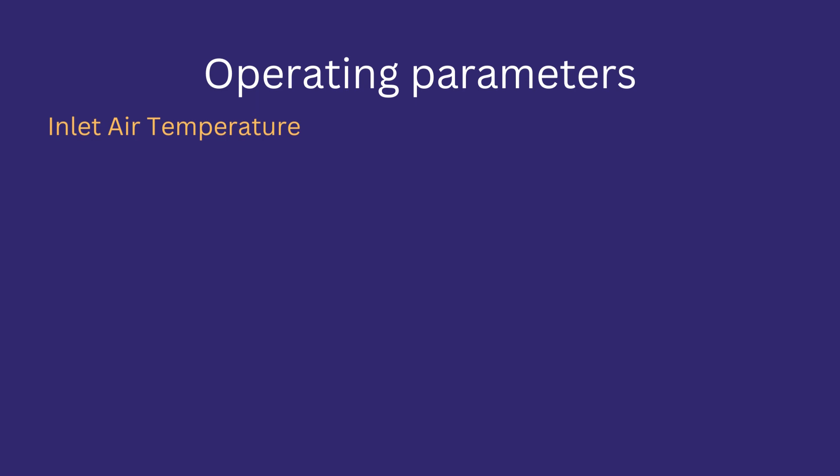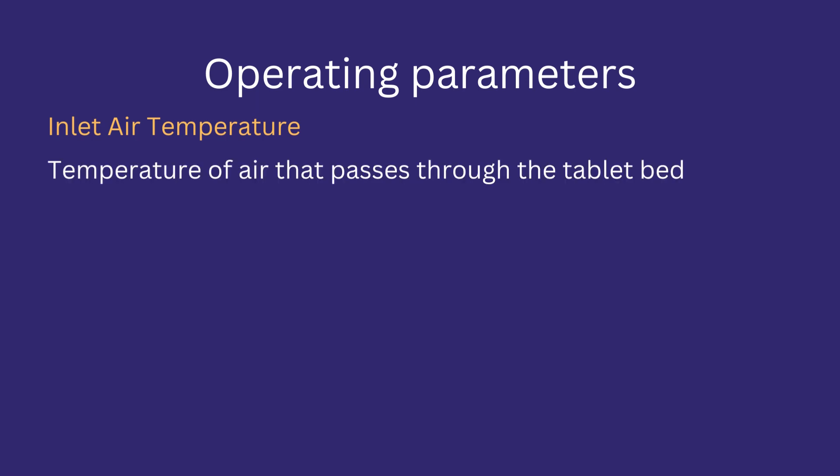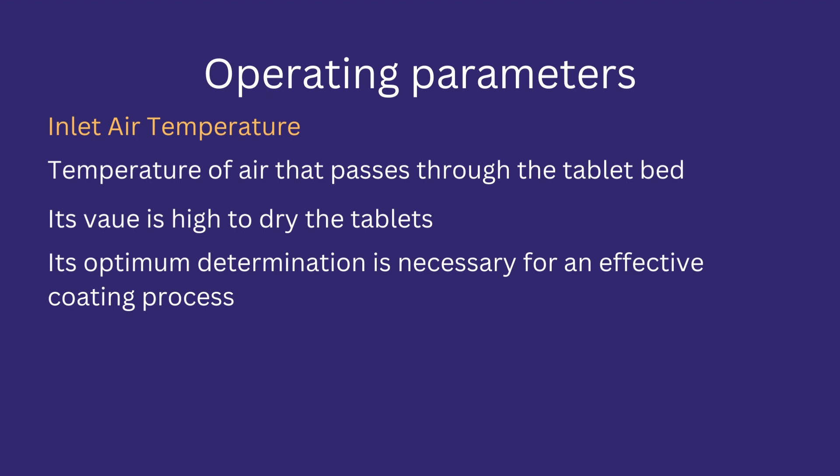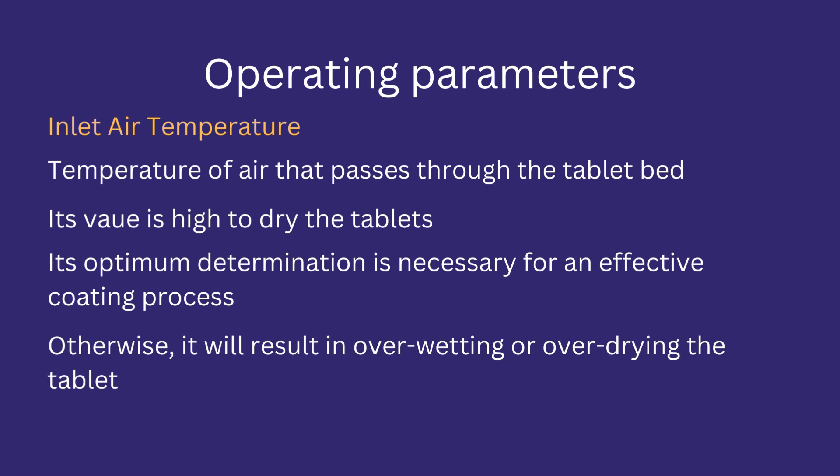Inlet air temperature is the temperature of the air that passes through the tablet bed. Increasing or decreasing this temperature will affect the tablets inside the pan. Usually inlet air temperature is kept high to keep tablets warm and assist the coating process. It is necessary to determine the optimum value because it affects tablet coating — otherwise the coating can degrade, resulting in over-wetting (application of more liquid than the standard volume) or over-drying if less liquid is applied to the tablet surface.